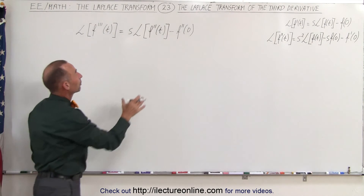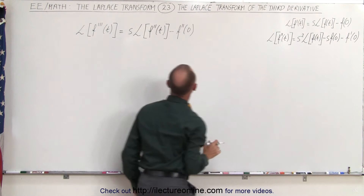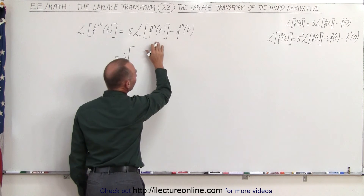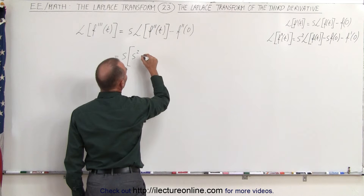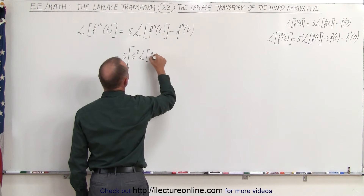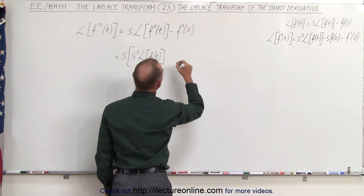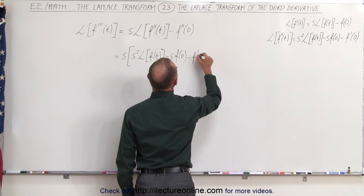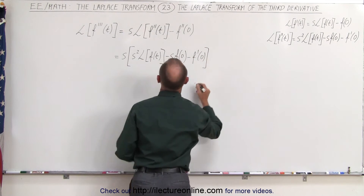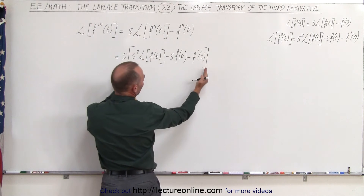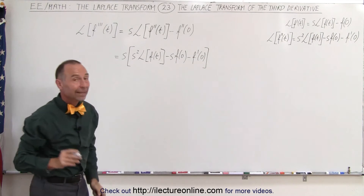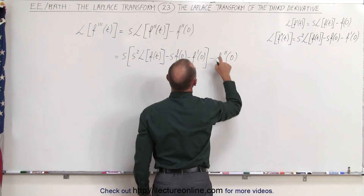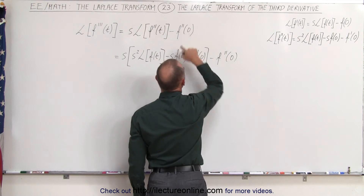Now we're going to replace the Laplace transform of the second derivative by what it equals. So this can be written as s times — and the Laplace transform of the second derivative is replaced by s squared times the Laplace transform of f(t) minus s times the function evaluated at zero minus the first derivative of the function evaluated at zero — and then we subtract minus f double prime of zero, that is, minus the second derivative of the function evaluated at zero.